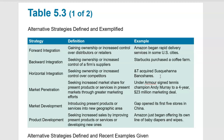Product Development means seeking increased sales by improving the present products or services or developing new ones. This could be a car manufacturer making a car more reliable with a better warranty. For a long time Hyundai struggled to get market penetration, and they developed a pioneering warranty of 10 years or 100,000 miles, thereby answering the question of quality. By guaranteeing the car for 10 years or 100,000 miles, it gave people the confidence to stand behind the quality of the car, and that really helped to increase the sales of that product.